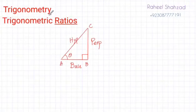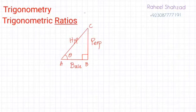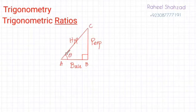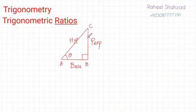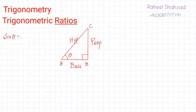In today's lecture we are going to discuss trigonometry. Our first topic is trigonometric ratios — these are ratios of sides of a triangle. We start with a right angle triangle ABC. We assume this angle is theta. Opposite to the 90 degrees is always the hypotenuse. Opposite to theta is the perpendicular (or opposite side), and the third side is the adjacent side or base. We have three trigonometric ratios: sine of theta, cos of theta, and tan of theta.